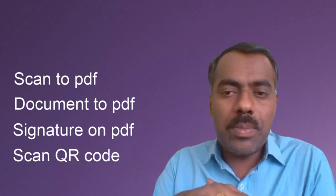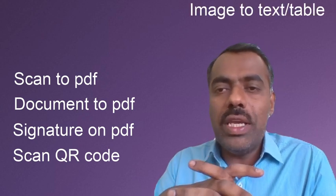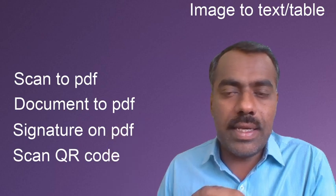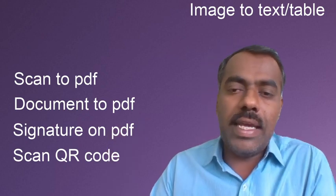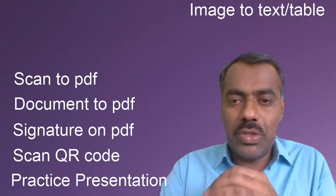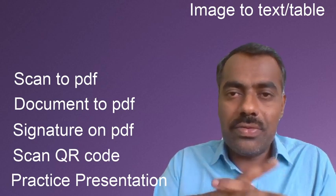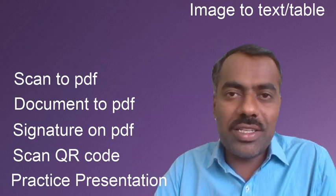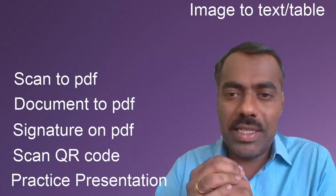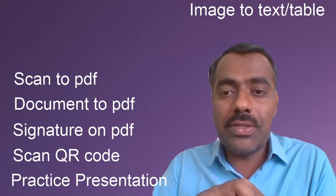You can also scan any type of QR code using this single application. Then the most interesting feature: you can do image to text. If you have an image where some text is written, you can copy that text. Or if you have an image with a table, you can extract it as an Excel sheet. And another very interesting one — if you have a PowerPoint presentation and you are going to give a talk, you can rehearse and this app will suggest where you can improve, which words to avoid. That is very useful.